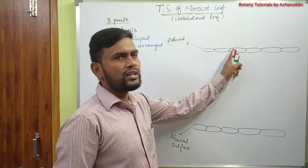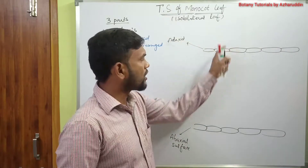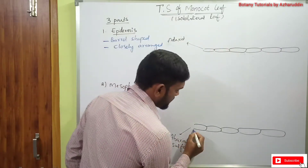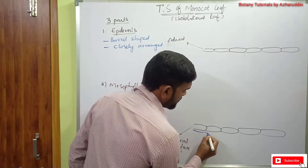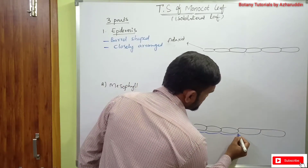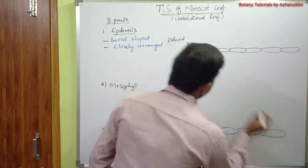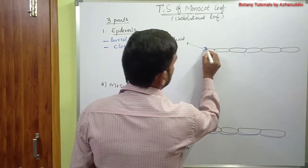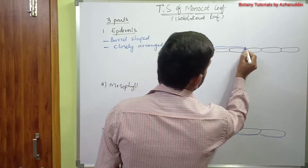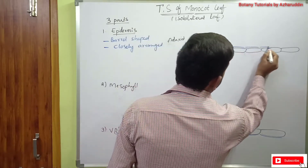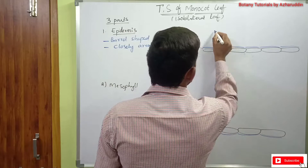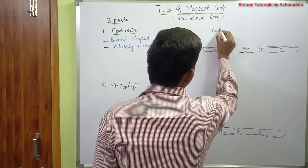The outer walls of epidermal cells are covered with a waxy layer. This waxy layer is called the cuticle.